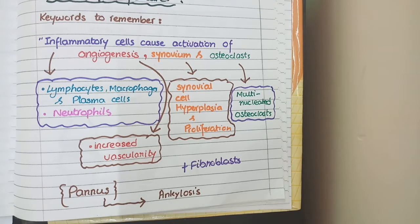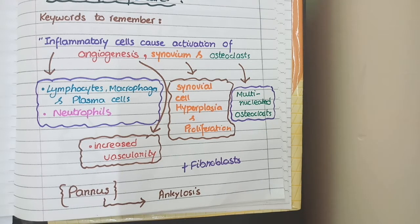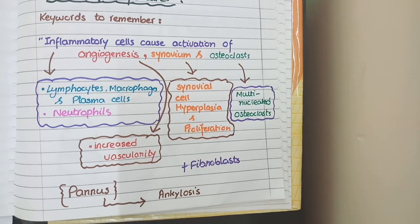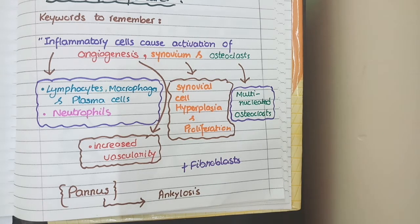The second keyword is activation of angiogenesis. So you can see increased vascularity in the form of an increased number of blood vessels. Along with this, you will also see an increased number of fibroblasts. This increased amount of fibroblasts and blood vessels is called granulation tissue, and you can see this granulation tissue here in the form of increased vascularity and fibroblasts.